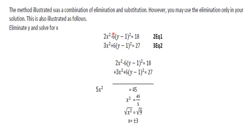Adding the equations: 2x squared plus 3x squared equals 5x squared, and 18 plus 27 equals 45. So 5x squared equals 45. Dividing both sides by 5, x squared equals 9. To remove the exponent, we extract the square root: the square root of x squared equals the square root of 9, so x equals positive or negative 3.